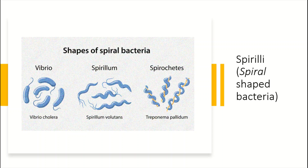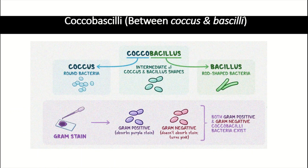Among spiral bacteria we have vibrio, spirillum, and spirochaete. There are also some bacteria that fall between cocci and bacilli in shape — these elongated bacteria are called coccobacilli, and they can be both gram positive and gram negative.